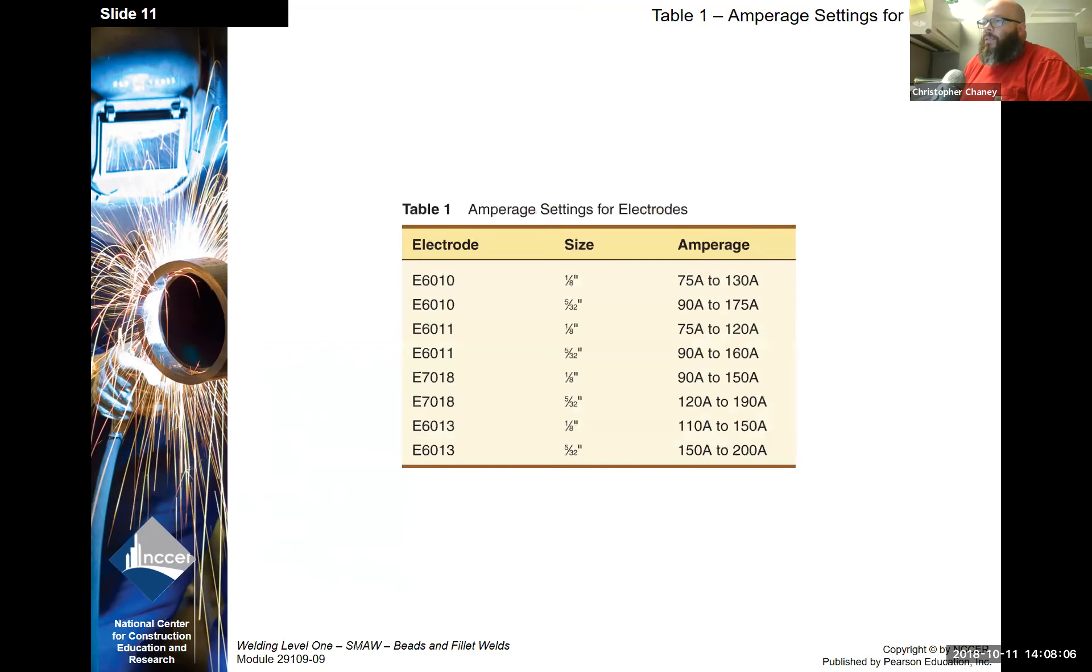Amperages for electrodes. E6010, we run that eighth inch, 75 to 130 amps. I find it runs best right around 95 amps in all positions with the exception of vertical which needs to be 85 to 90 amps. 7018, for eighth inch, 90 to 150. I feel like 125 is where it actually performs the best.